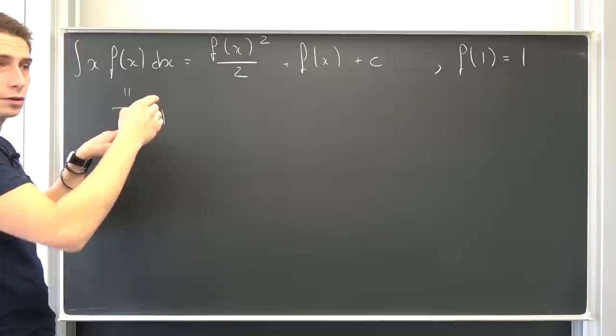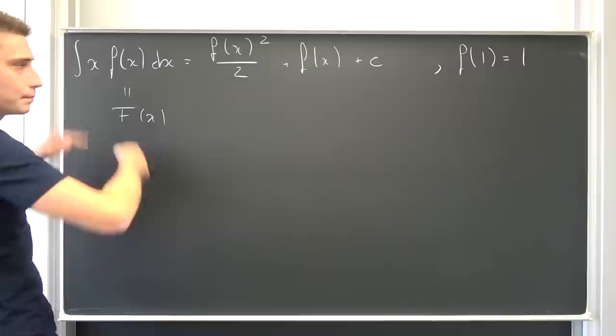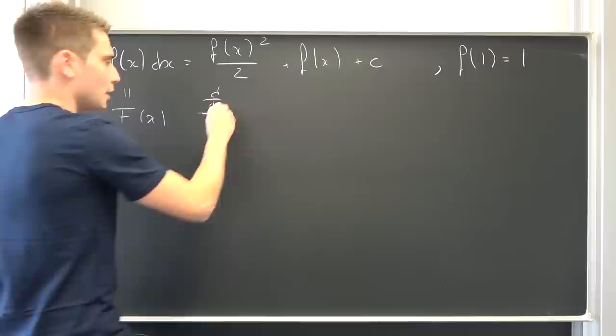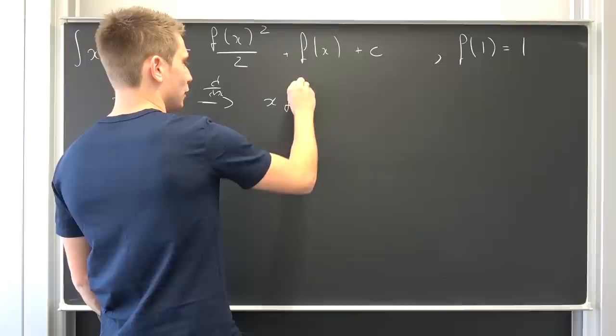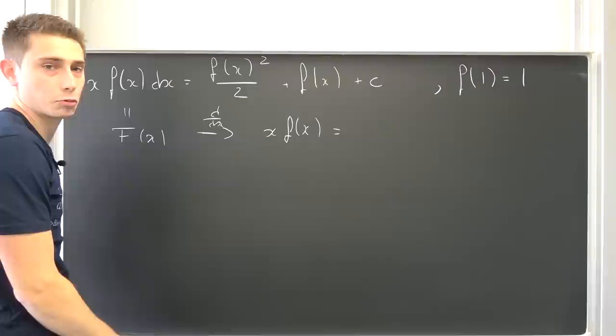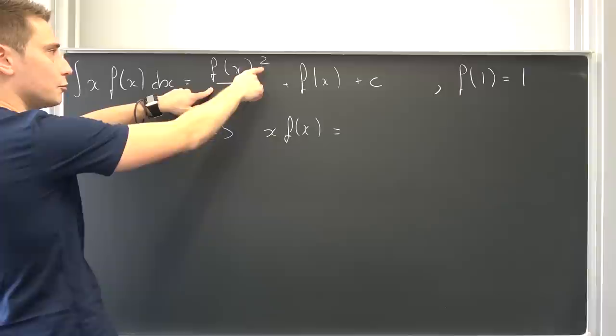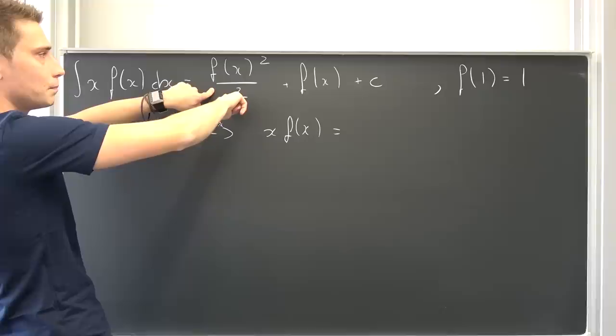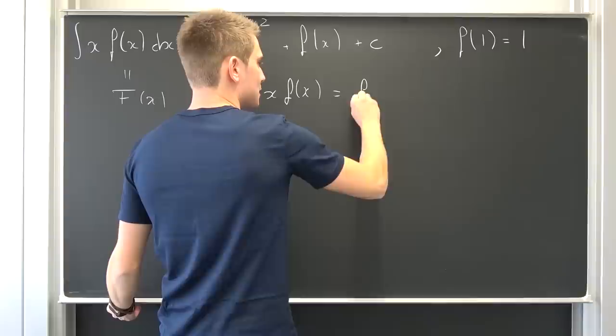What would happen if we were to differentiate a primitive? The biggest property of a primitive is that if you differentiate it you end up with the original function. So meaning if we differentiate both sides, we end up with this function itself — the differential of f of x with respect to x is just x times f of x. On the other side, differentiating the constant gives zero, then we use the chain rule: we reduce the exponent by one, drag the exponent down, two over two gives one, and this is simply f of x.